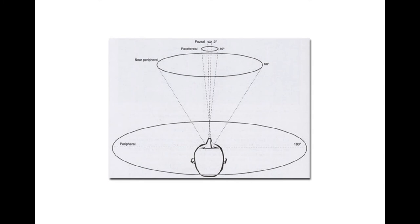The foveal region of your field of view corresponds to about a two-degree cone — relatively very small. A 10-degree cone is called your parafoveal, a 60-degree cone is your neoperipheral, and peripheral vision covers 180 degrees. As you go further from foveal to parafoveal to neoperipheral to peripheral, your visual acuity gets worse and worse.